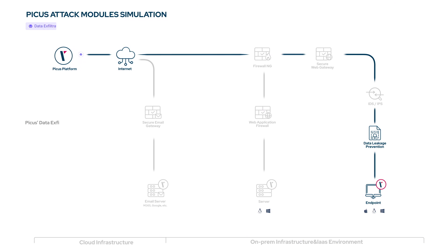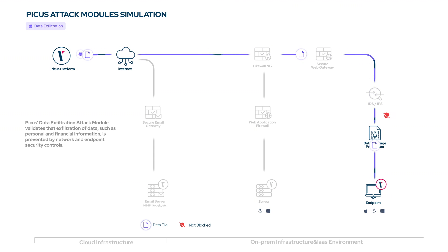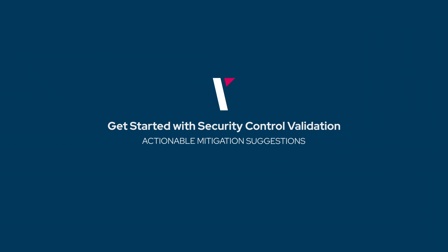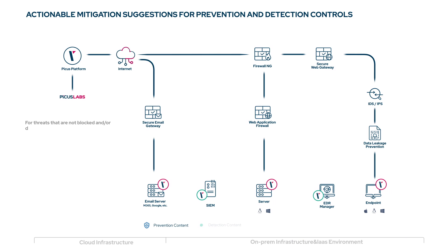The PICAS Data Exfiltration attack module validates that exfiltration of data — such as personal and financial information — is prevented by network and endpoint security controls. For threats that are not blocked and/or detected, PICAS security control validation provides vendor-specific mitigation suggestions to optimize prevention and detection controls.